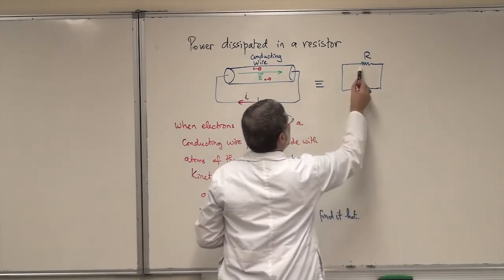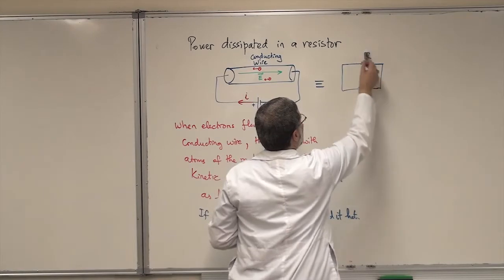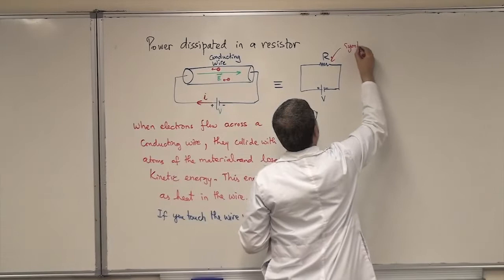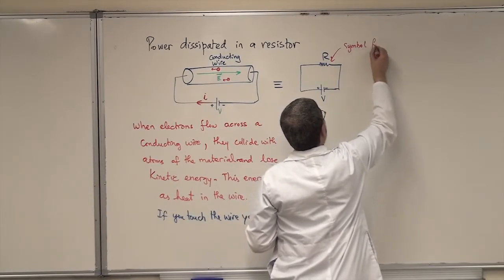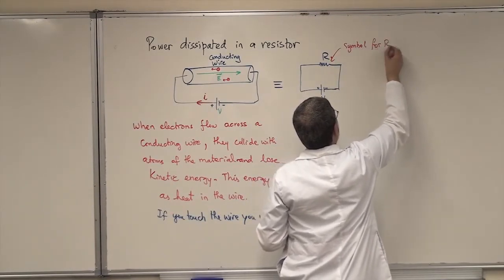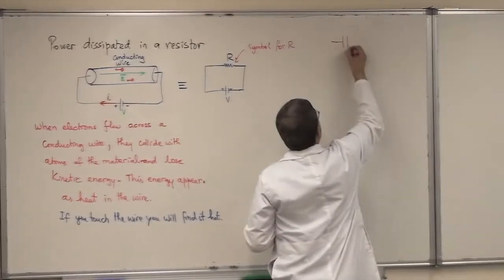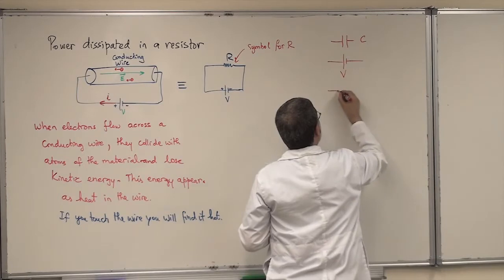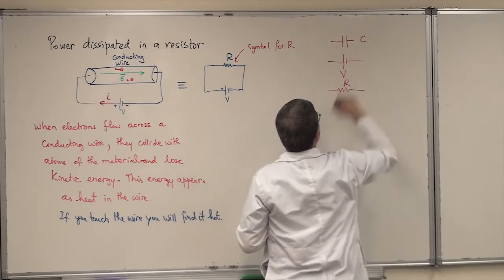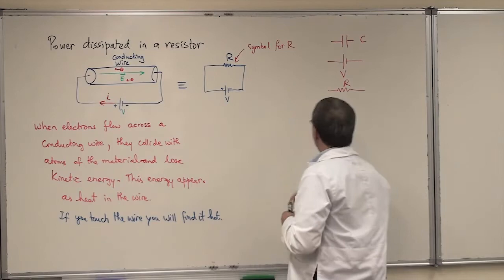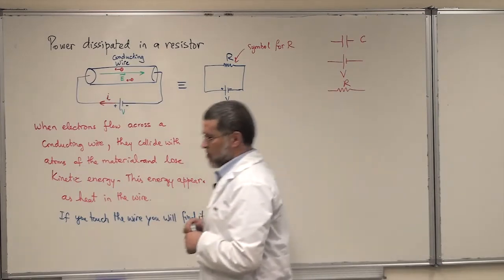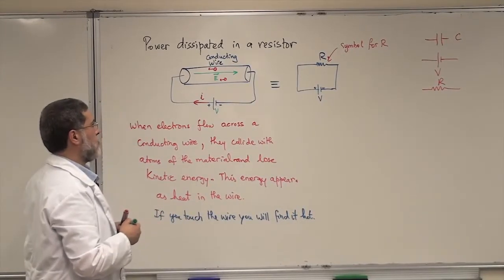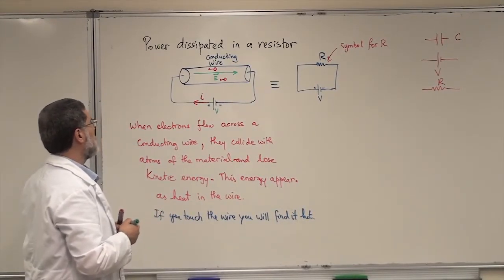This is the resistance — we put a wire like this and label it R. This is the symbol for resistance. Remember, the symbol for capacitors was like this — this is C, this is V, and this is now R. So we have three symbols now in electricity. Later we will introduce others if they exist; otherwise these are the three symbols we will be using for these sections.